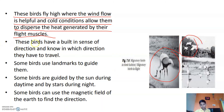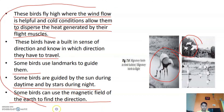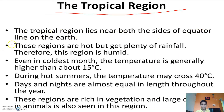These birds fly high where the wind blows helpfully and the cold conditions allow them to dissipate the heat generated by flying. These birds have a built-in sense of direction. Some birds use landmarks to guide themselves; some birds are guided by the sun during the day and by stars during night; and some birds can use the magnetic field of the Earth to find direction.